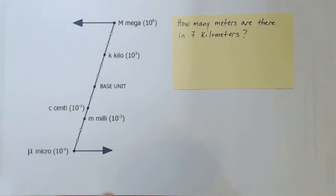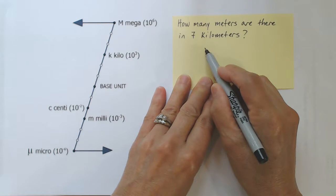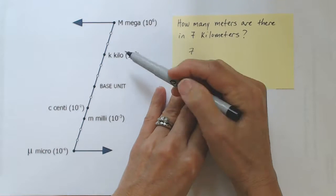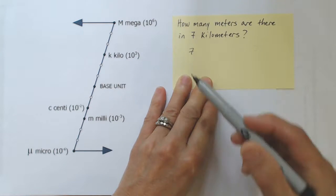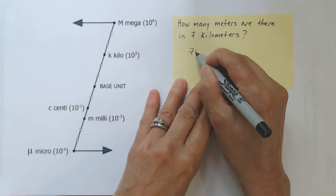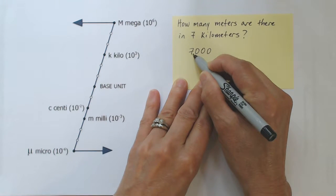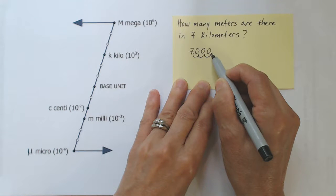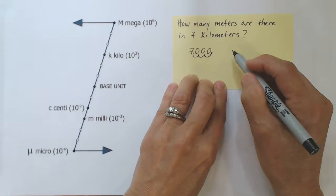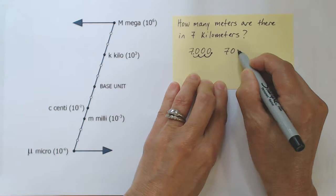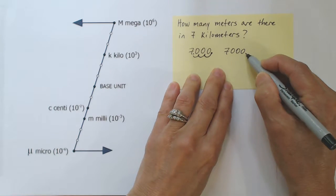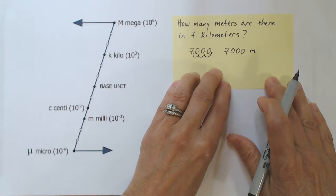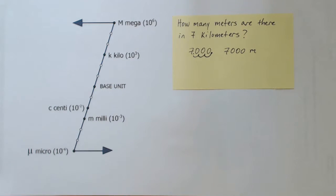So in this problem, we're going from 7 kilometers to however many meters. I'll write 7 kilometers and then move the decimal point one, two, three places to the right. I'll fill in some zeros — one, two, three — and redraw the decimal point. Writing this properly: 7 followed by three zeros. The decimal point is implied. So to answer this problem, there are 7,000 meters in 7 kilometers.